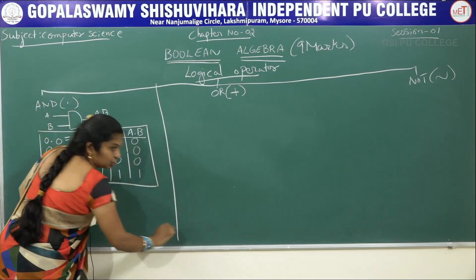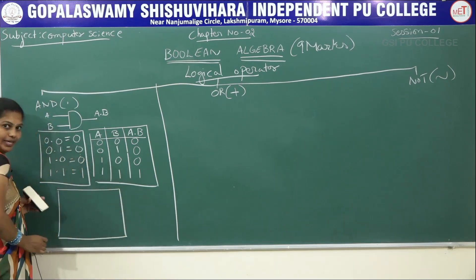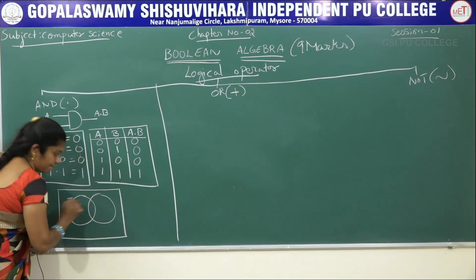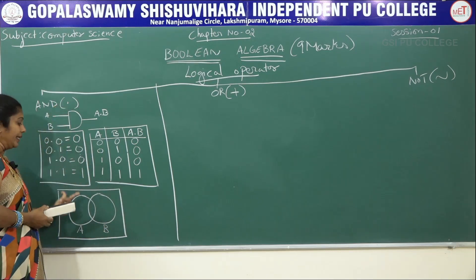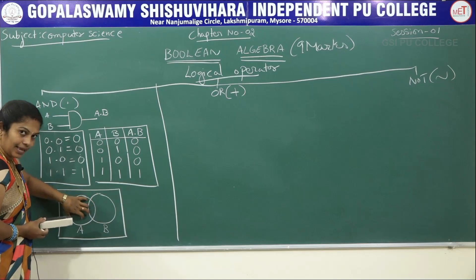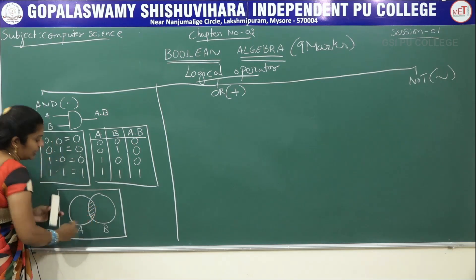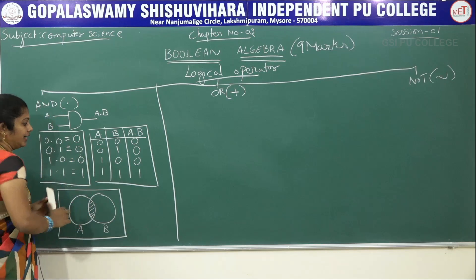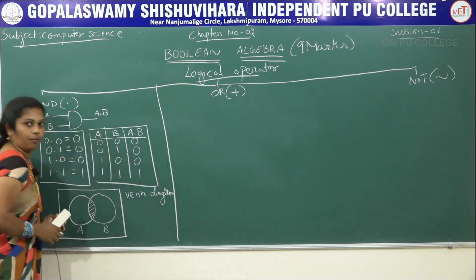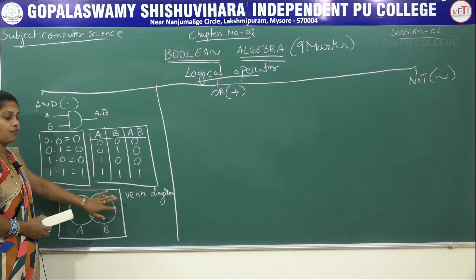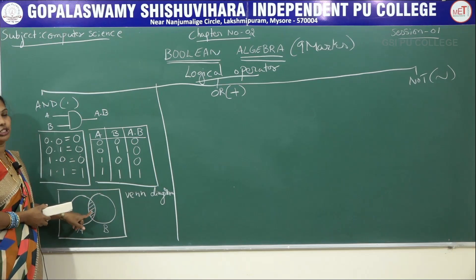For the AND Venn diagram, we take two circles representing A and B. In AND operation, only the place where both A and B are combined — the intersection — must be shaded. That is the Venn diagram for AND. Minimum two inputs are required; you can use more than two if needed.